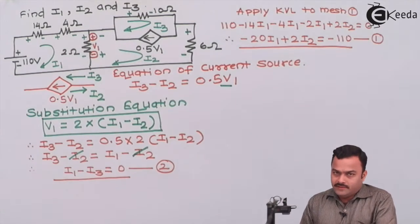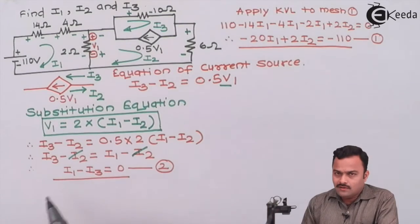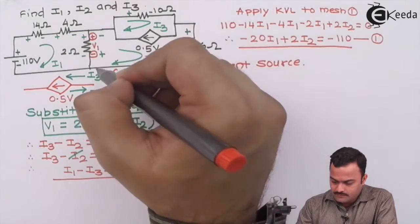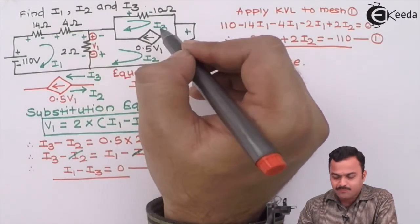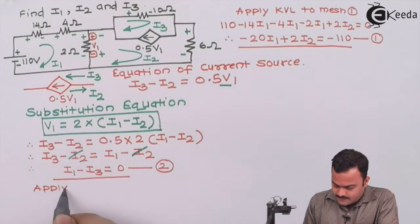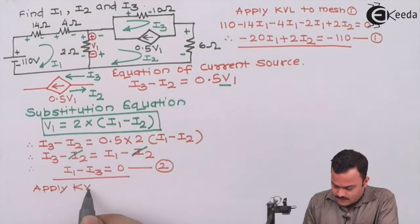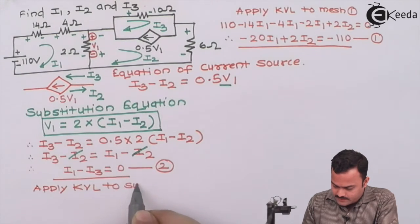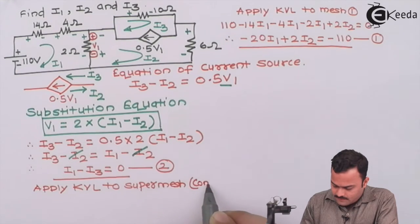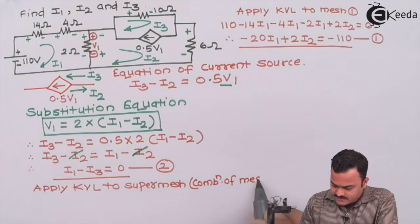To solve the problem we need three equations. We have two so far. The third equation comes from applying mesh analysis to the supermesh formed by the combination of mesh 2 and mesh 3.